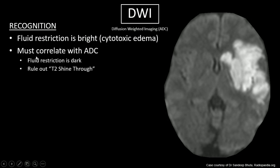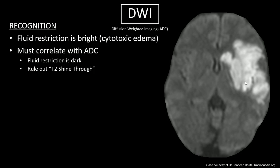You must correlate DWI findings with ADC, which stands for apparent diffusion coefficient. I like to think of DWI images as a stack of pancakes — multiple images layered on top of each other. One layer is ADC, which I think of as the raw data, and there's also a T2 image pancaked on top to give anatomic detail. What can happen is if you've got an area of very high T2 intensity, it can shine through the pancake stack and trick you into thinking you have ischemia. On ADC, fluid restriction will be dark, and we use this to rule out T2 shine-through.